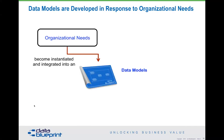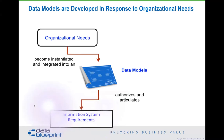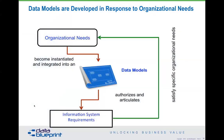Those organizational data needs become instantiated and integrated into existing and new data models — they are called data blueprints. Those data blueprints then authorize and articulate specific information systems requirements. If we do not follow that path, we have no documentation on the data requirements of our systems. If we don't understand those requirements, we have no ability to make use of them later when we're trying to enhance, modify, change, or adapt our systems as they evolve. We need to have feedback loops that say: yes, you got what you were trying to do, or no, you didn't.